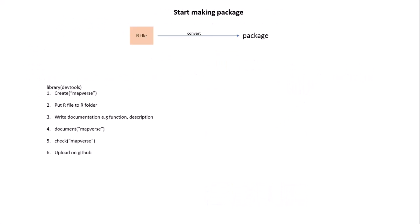You can convert any R file into a package by writing only six lines of code. First, you need the devtools package. You write the create() command, which creates a package for you. Then you put your file under the R folder, write the documentation, run the document() function, then the check() function, and then you can upload your package to GitHub.